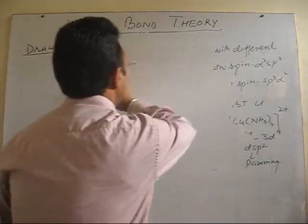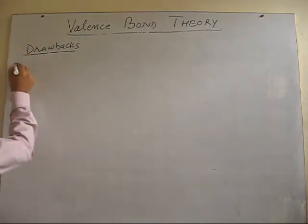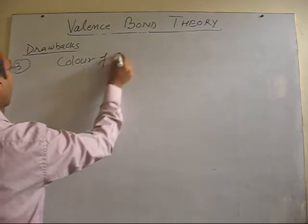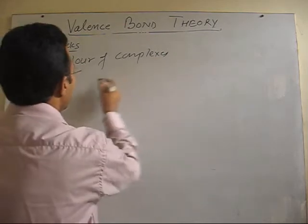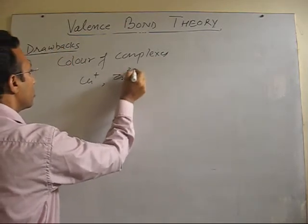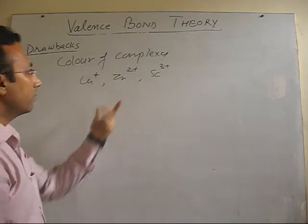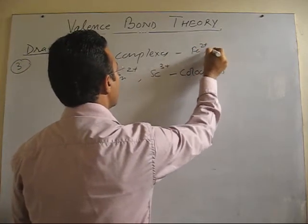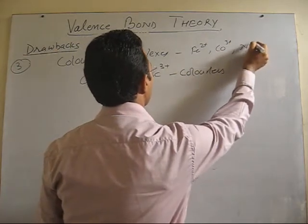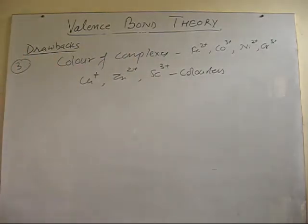Now, after this, there are certain other limitations, which are also very important. Number 3, VBT could not explain color of complexes. Most of the complexes of transition elements, they are colored. Except few, like copper 1, zinc 2 complexes, scandium 3 complexes, where we have specific reason according to configuration. So, these complexes are colorless. So, why the complex is colored? This could not be explained by VBT.